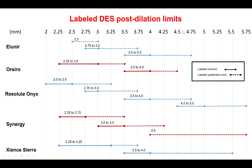These are the post-dilation limits. The Synergy as well as the Resolute in 4.5 and 5.0 mm can be post-dilated up to 5.75 mm, whereas the 3.5 and 4.0 mm Zion-Sierra can be post-dilated all the way up to 5.5 mm. It is very important to know these post-dilation limits when there is a large discrepancy in the size of the vessel, for example in the case of coronary aneurysms.